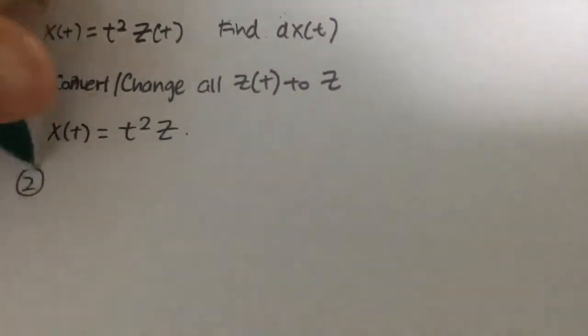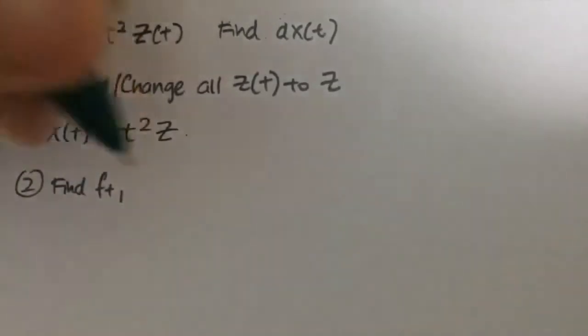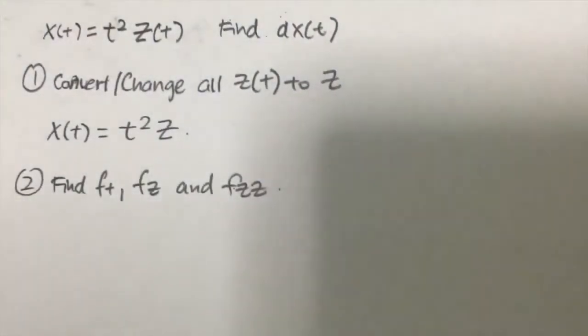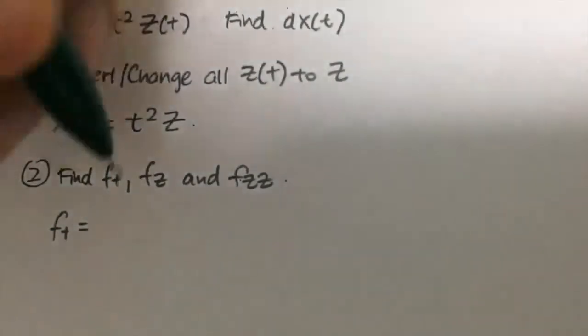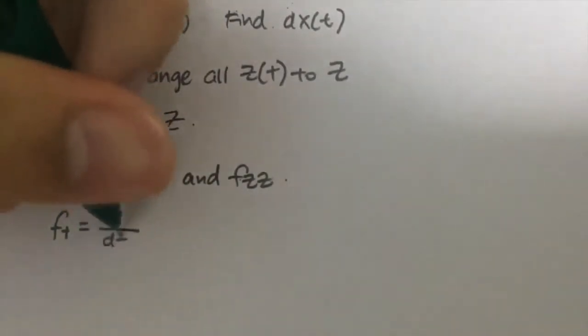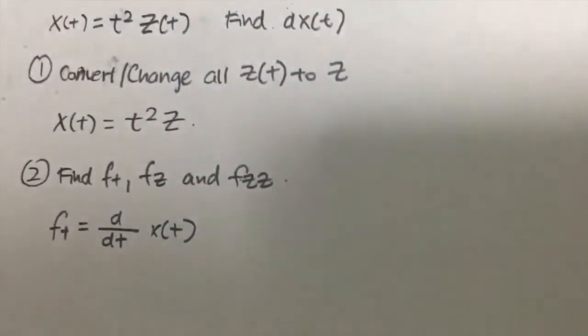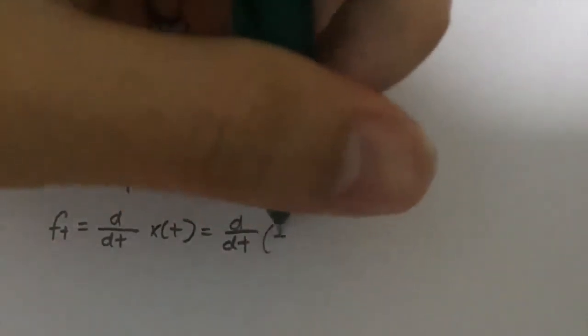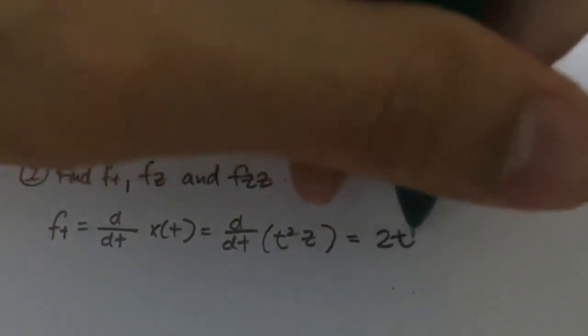Now the next thing that we need to do is to find what is your f_t, f_z, and your f_zz. Okay, so what do you mean by f_t? So f_t basically means that it is to differentiate with respect to t of your X(t), which in this case your X(t) is what? t squared Z. Okay, so differentiate with respect to t of t squared Z, and that gives you 2tZ.